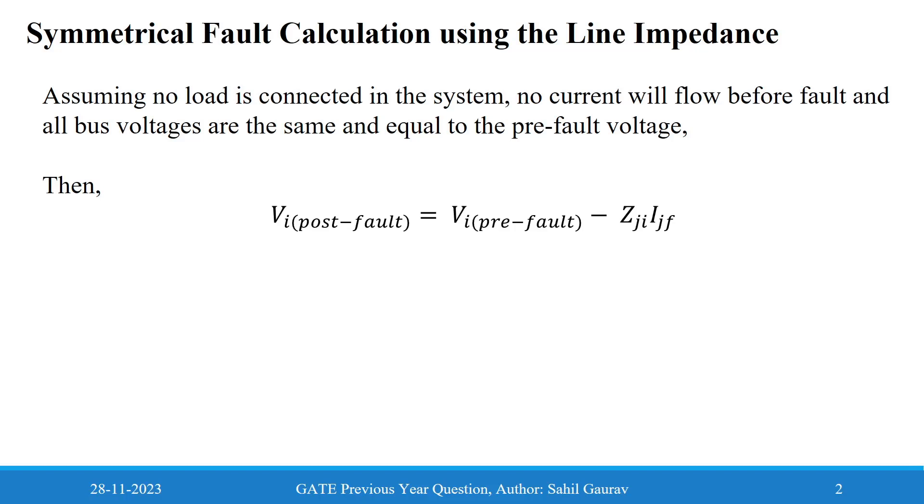We have to first assume some things so that we can apply this expression. Here we have assumed that no load is connected in the system, no current will flow before fault, and all the bus voltages are the same and equal to the pre-fault voltage. So we can find the post-fault voltage at bus I using this expression V_i(post-fault) = V_i(pre-fault) - Z_ij * I_fj, having the line impedance connected between the fault bus and the bus where we are finding the voltage.